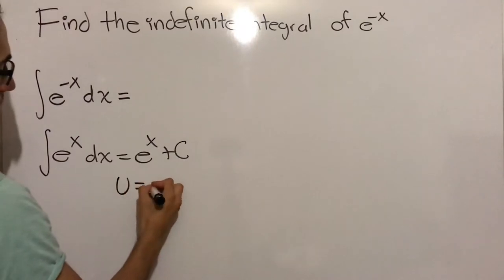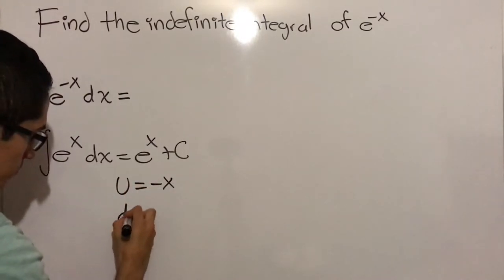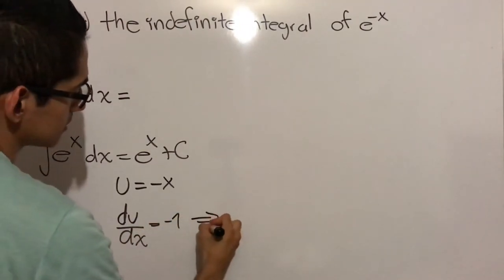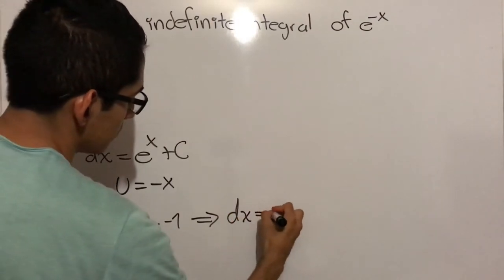So let u equal minus x. The derivative of u with respect to x equals minus 1. And this implies that dx equals minus du.